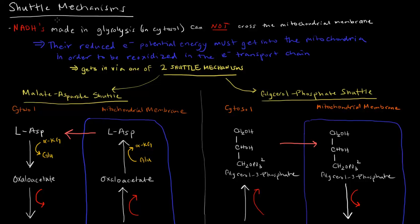In the last video, I mentioned shuttle mechanisms as the reasons why NADHs that are made in glycolysis could be valued at 1.5 or 2.5 ATP.